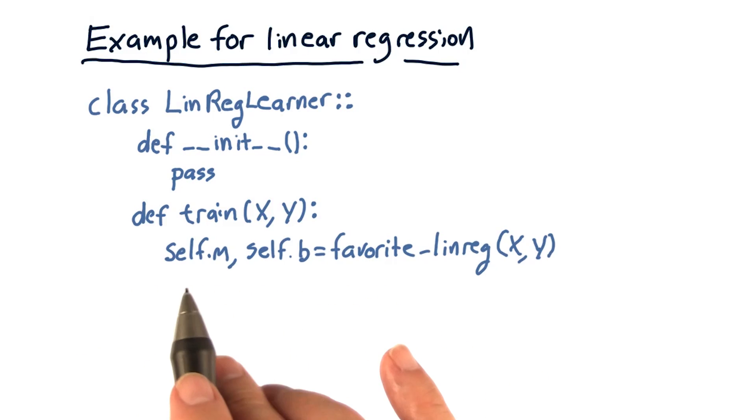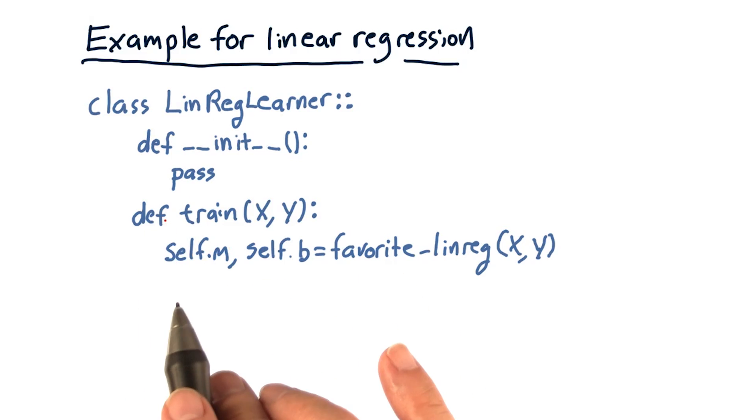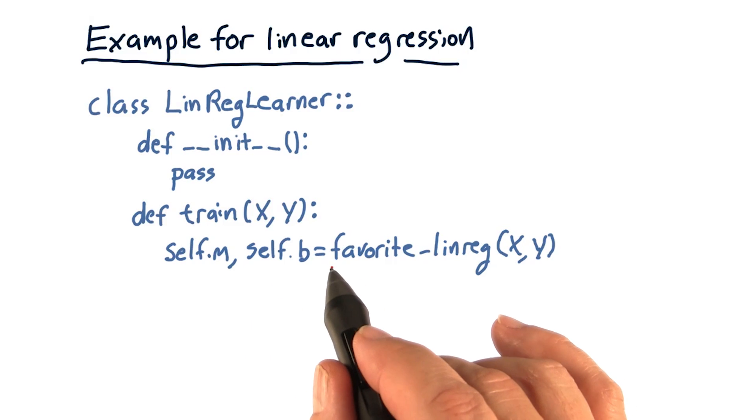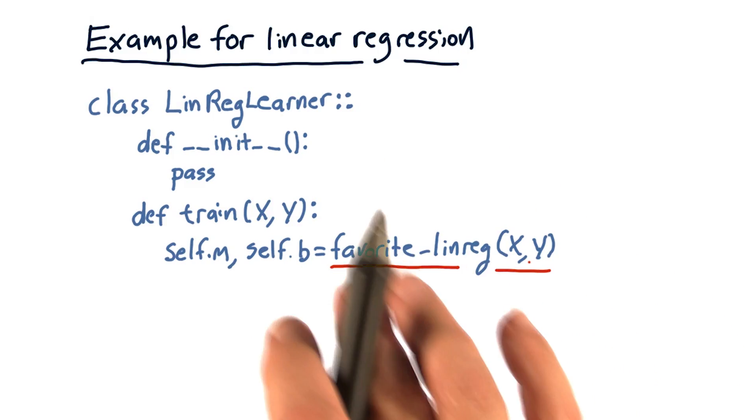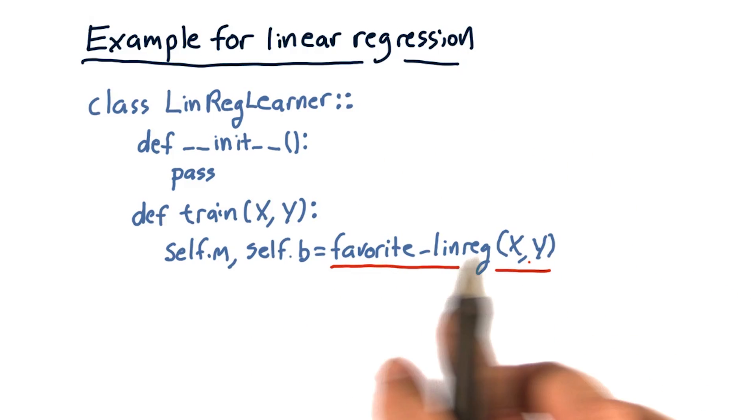So here on the left hand side, we have self.m, which means the m goes to the local instance and b to the local instance. And you're allowed to use any number of linear regression algorithms at your disposal as part of SciPy and NumPy. So go Google and find which one you want to use here and just stuff its output into m and b.